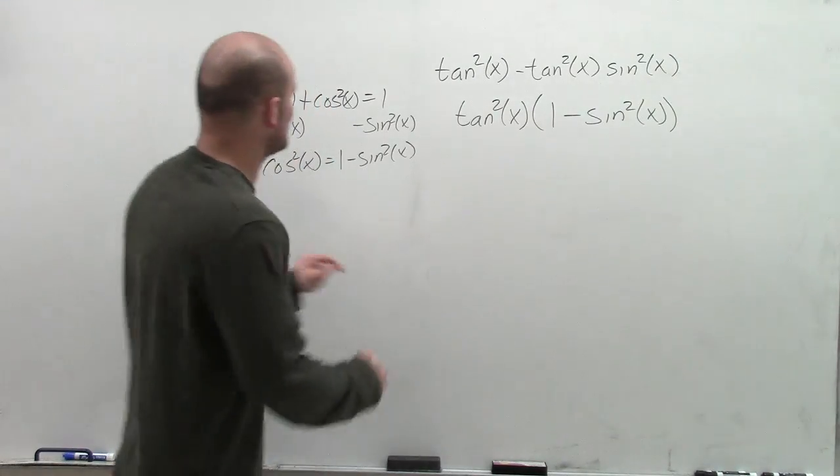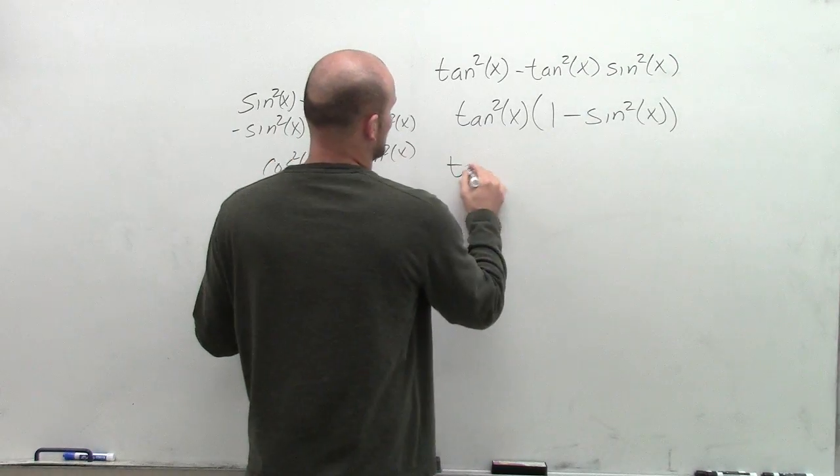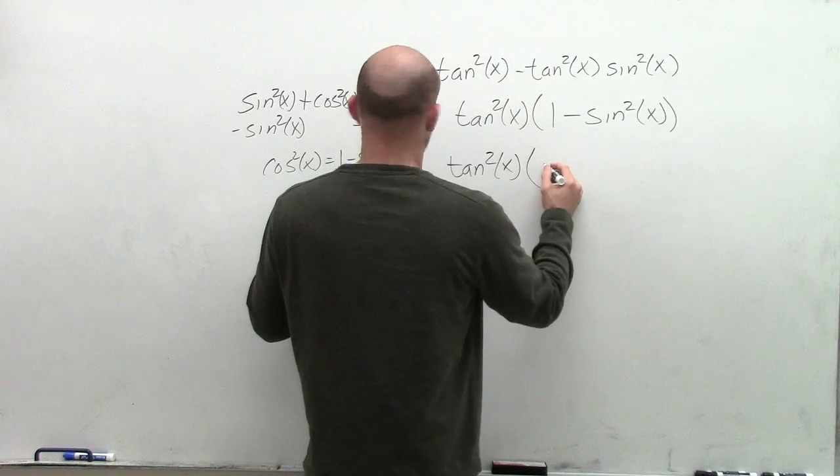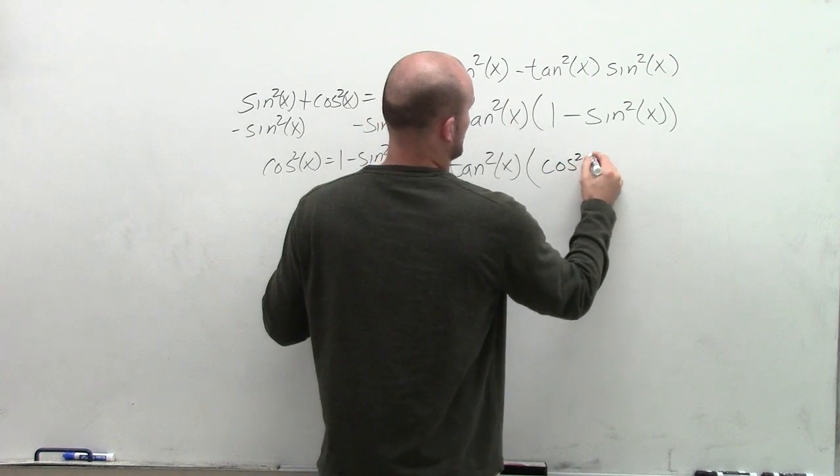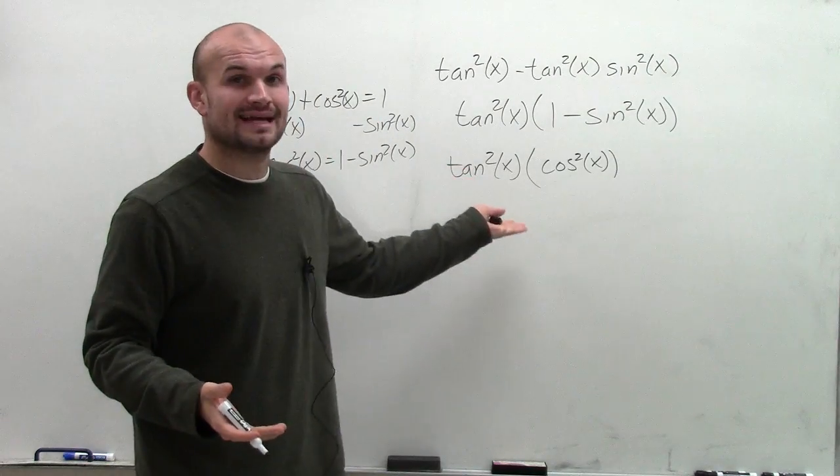So what I can do is I notice that cos²(x) is equal to 1 - sin²(x). So therefore, I can rewrite this as tan²(x)·cos²(x). Now, working a little bit further by using the quotient identity...